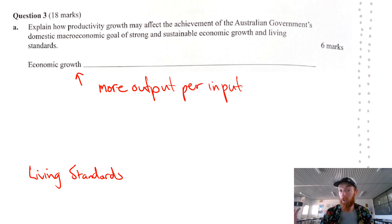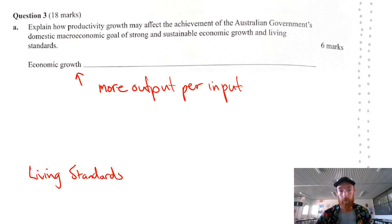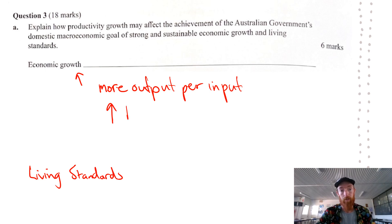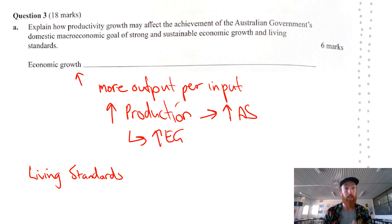They're more efficient with their resources or resource allocation. This could happen through education and training, or research and development. Getting more output per unit of input means production overall is going to be increasing. So therefore, more production means more aggregate supply, which means increased economic growth and that goal is more likely to be achieved.